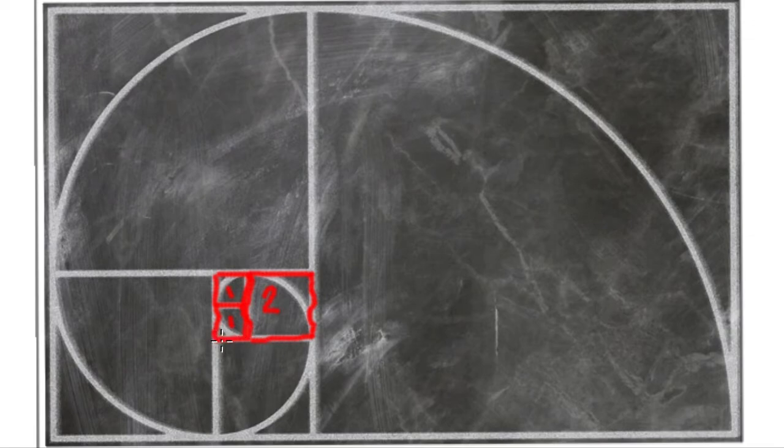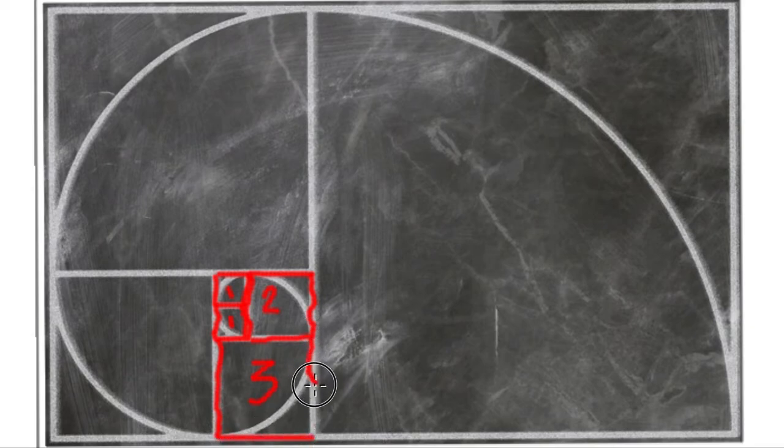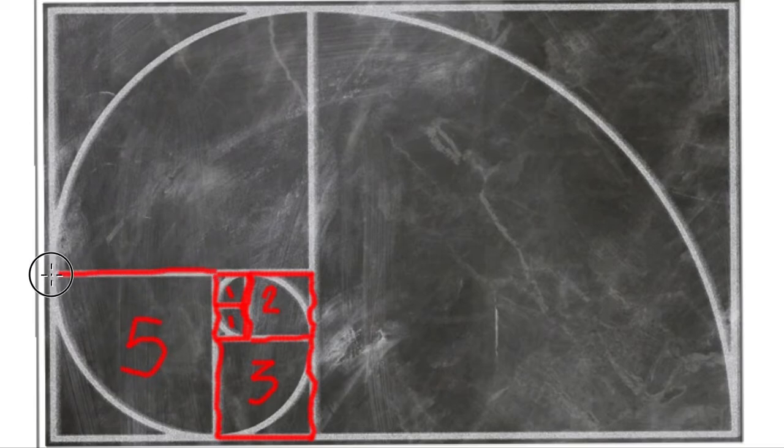Now adding this one and two here we have a side length three actually, and we create a square out of that, a square with side length three. Of course, take note in squares all the sides are equal. Then with side length two here and side length three, what we're going to do is add two and three. What we have is a square with side length five and we're going to make that as a square.